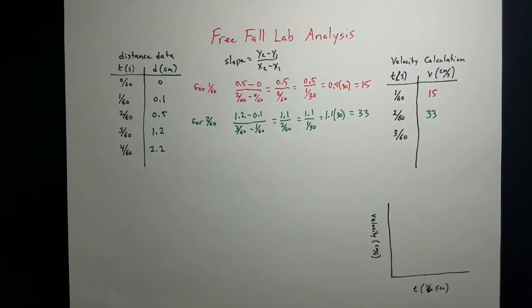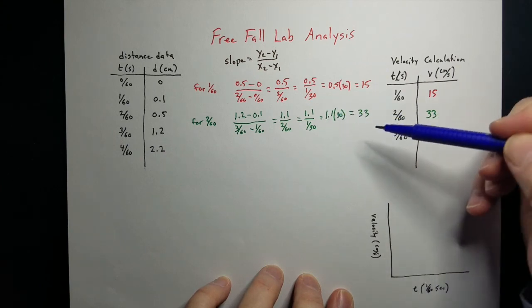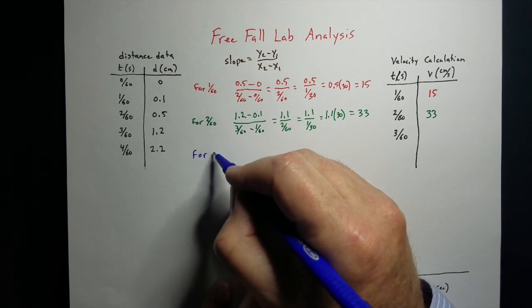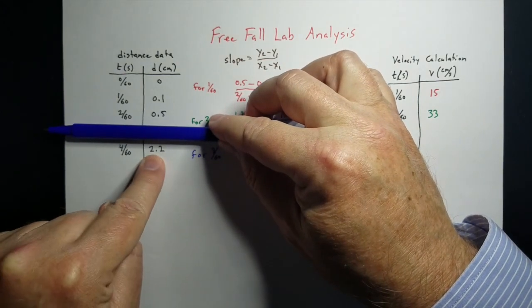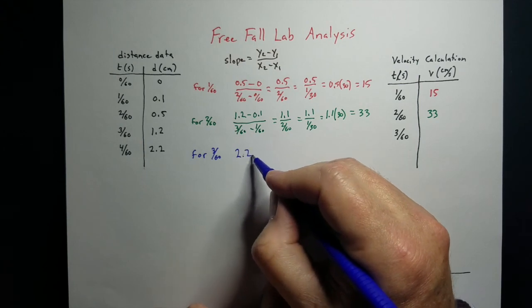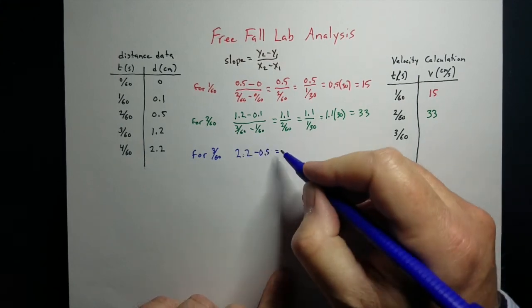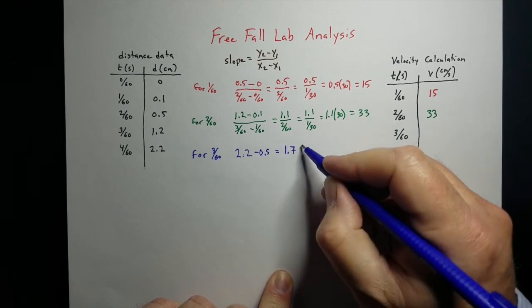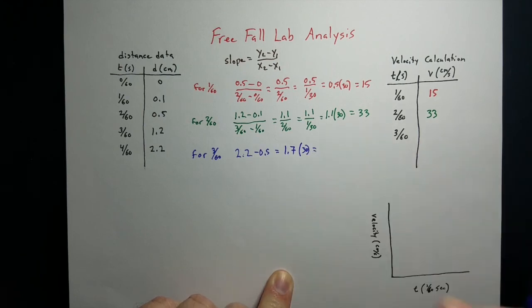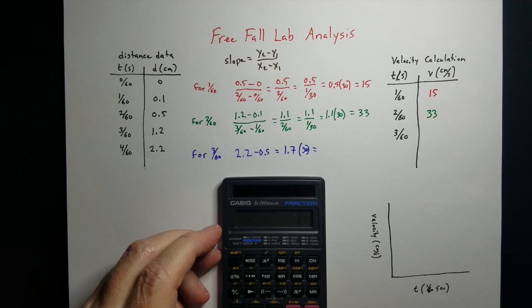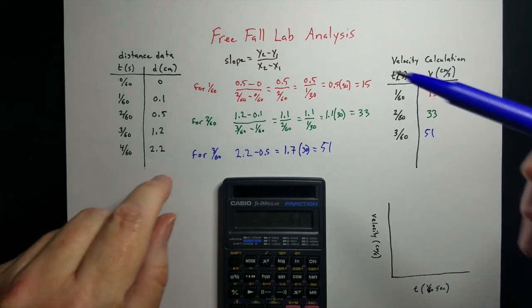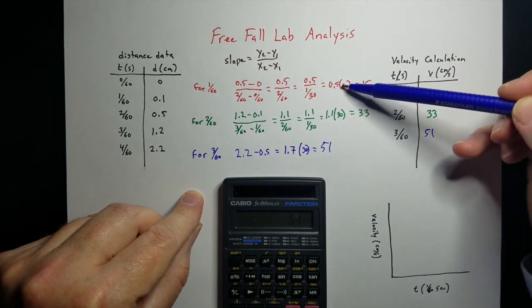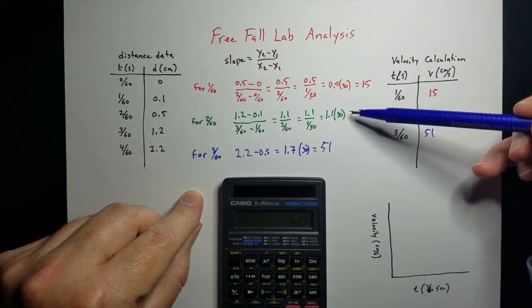Here's the shortcut: the denominator always ends up as 2/60ths, which always reduces to 1/30, so you always multiply by 30 on that last step. For 3/60ths, cover it up, take the point after minus the point before: 2.2 minus 0.5 equals 1.7, then multiply by 30 — giving 51 centimeters per second. So all you have to do is take the point after minus the point before, and multiply by 30.